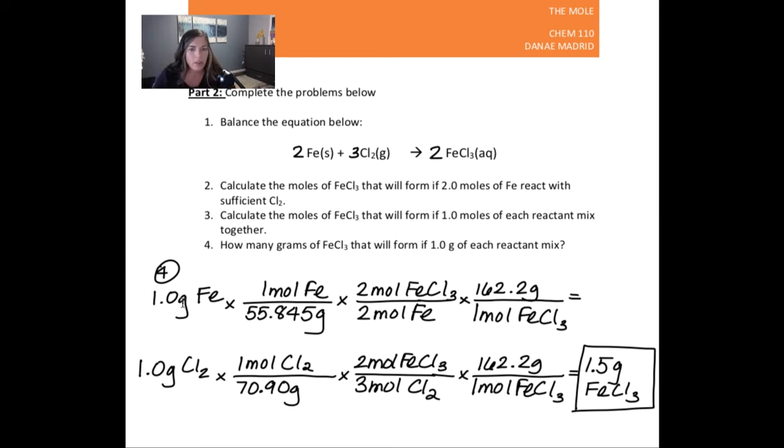All right, so this is where most of you went wrong. You gave me two answers, but there should only be one answer. So you can calculate like I did. You have two lines of calculations, but one of those answers is your final answer. All right, so we start off with what's given in the problem. It says one gram of each reactant is mixed. So I start with 1.0 grams of iron and 1.0 grams of chlorine because those are my two reactants. Separate calculations. They'll give you two different numbers.